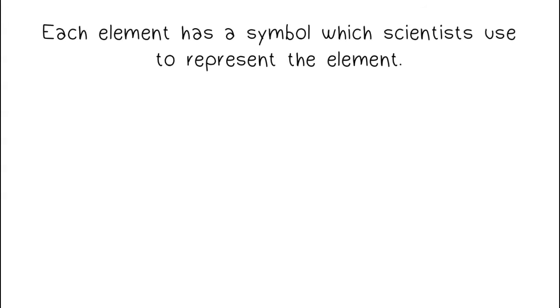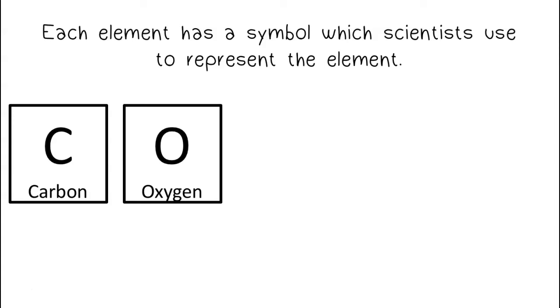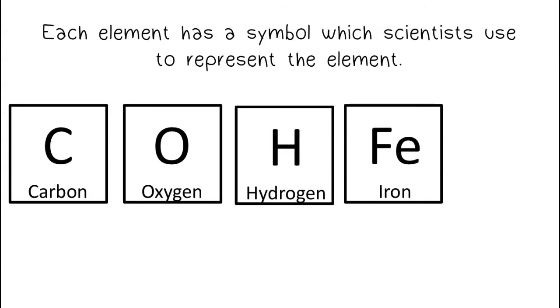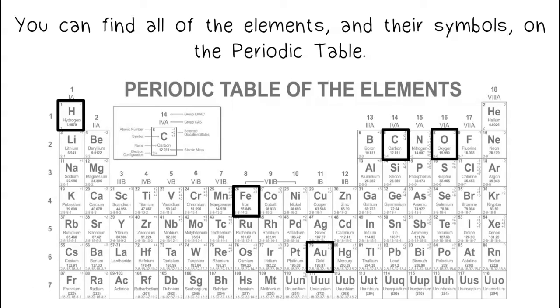Each element has a symbol which scientists use to represent the element. The symbol for carbon is C, oxygen is O, hydrogen is H, iron is Fe, and the symbol for gold is Au. You can find all of the elements and their symbols on the periodic table.